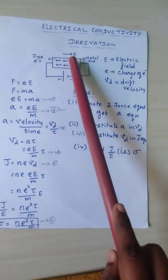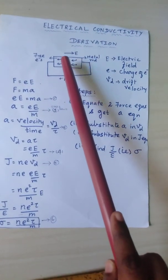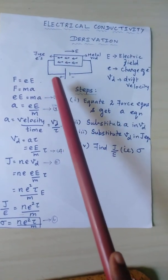When we apply an electric field to this rod, the electrons - the free electrons - move towards the positive potential.